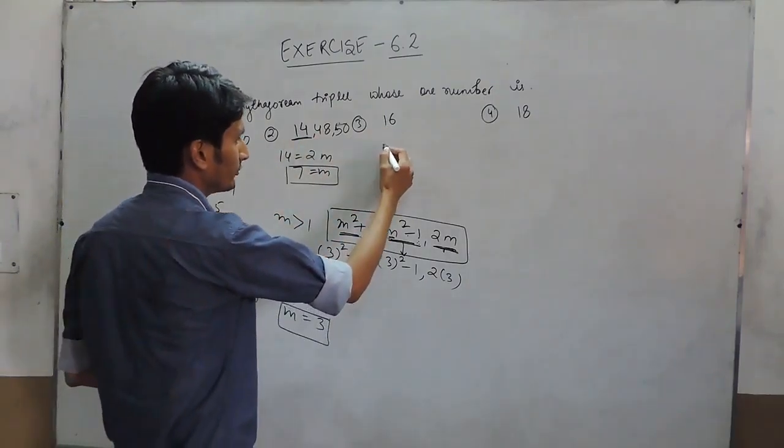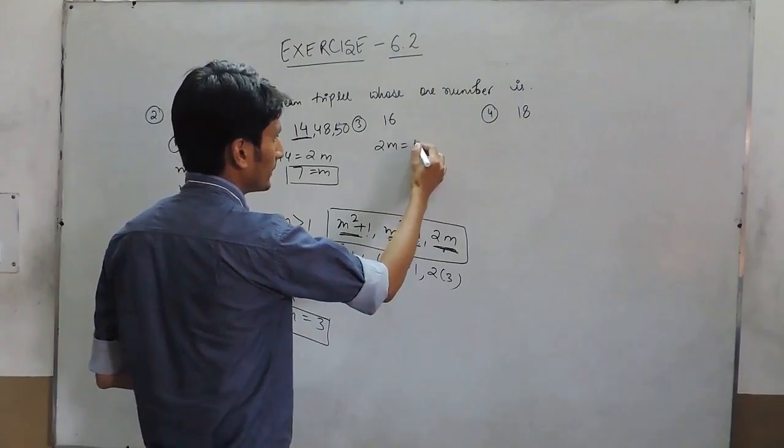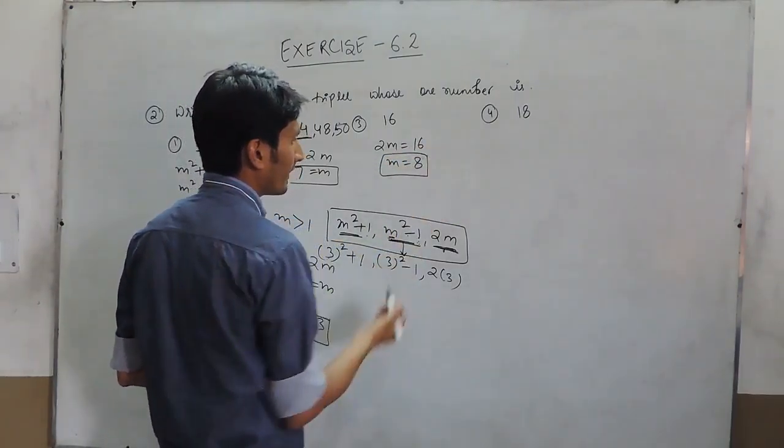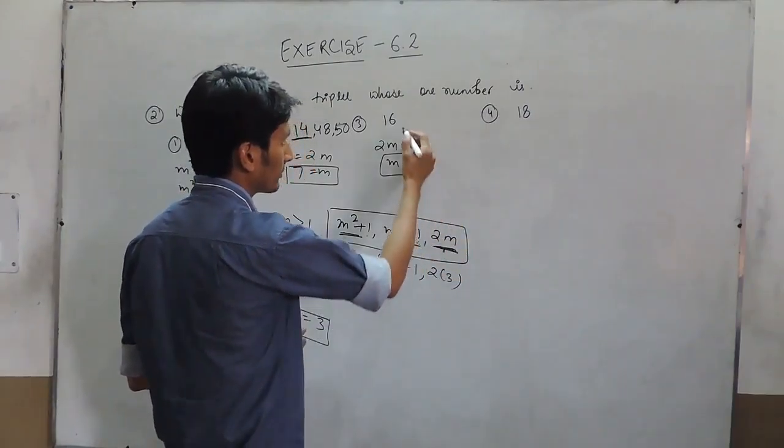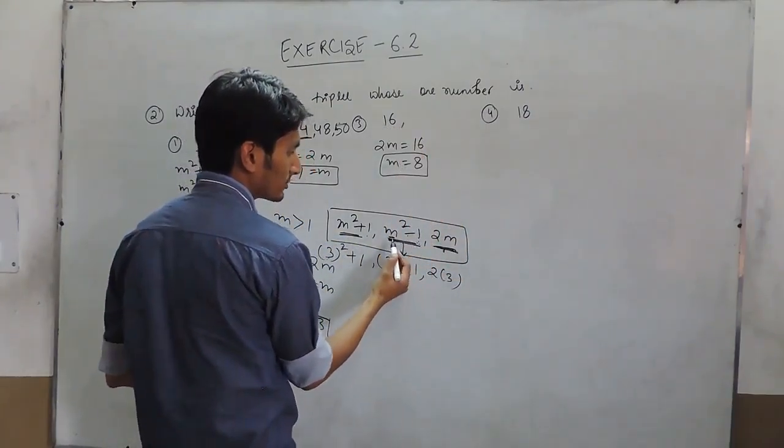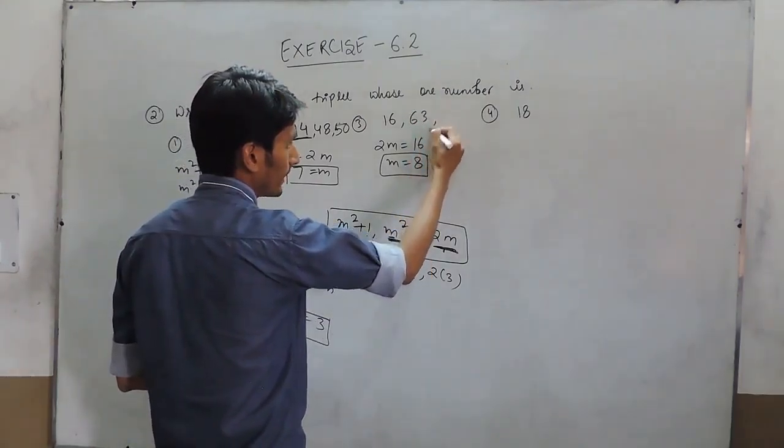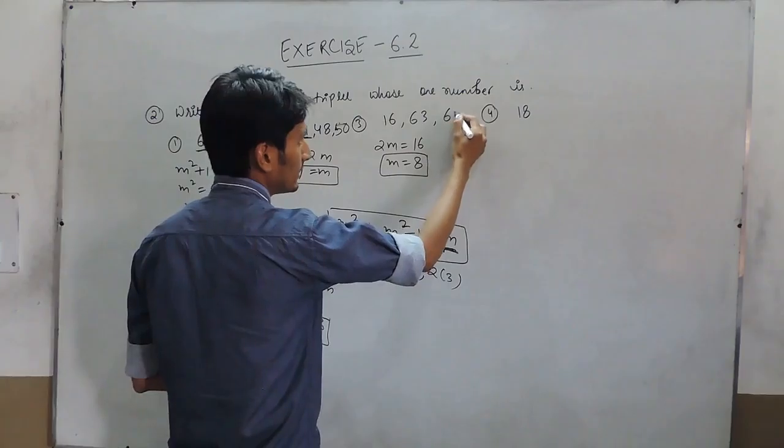Same case with this. Here the value of 2m must equal 16, so the value of m must be 8. If the value of m is 8, one of the triplets is 16, the other must be 64 - 1 = 63, and this must be 65.